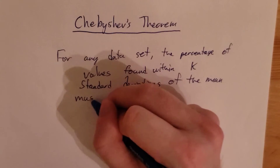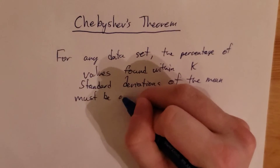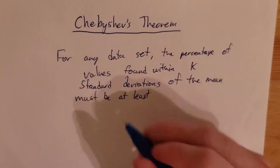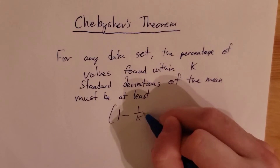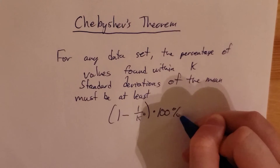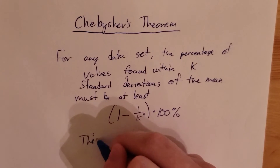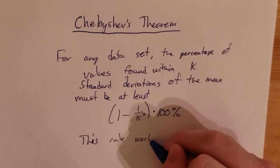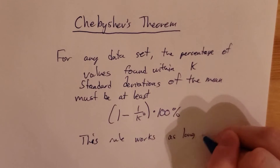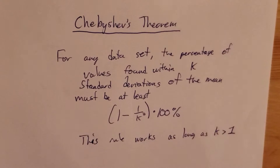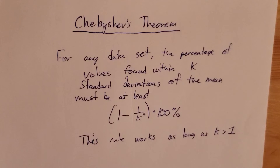...must be at least (1 minus 1 over k squared) times 100 percent. By the way, this rule works as long as k is greater than 1. If k is equal to 1, we get 0, so we can't really say much about one standard deviation, but you can say information about one and a half standard deviations, two standard deviations, and so on.